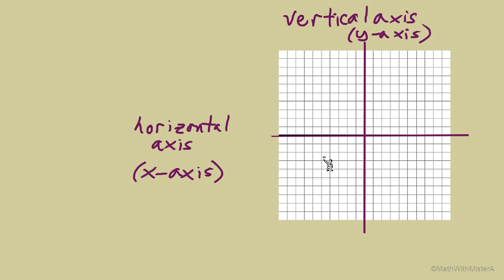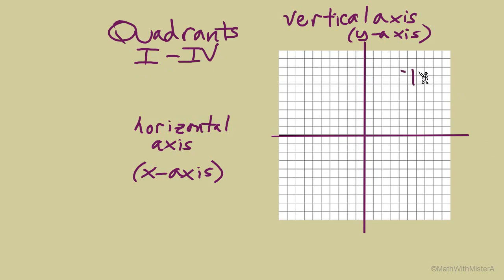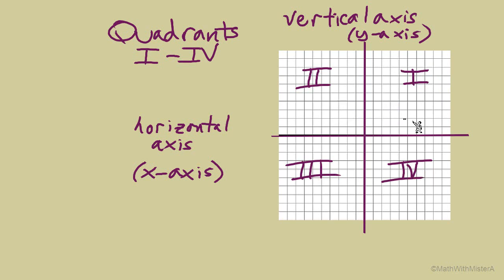The coordinate plane is divided into four sections that we call quadrants, labeled with Roman numerals 1 through 4. Quadrant 1 is in the top right, and then it goes in a counterclockwise direction: Quadrant 2, 3, and 4. The top right is Quadrant 1 because it contains only positive numbers — positive on the horizontal axis and positive on the vertical axis. Quadrants 2, 3, and 4 all have negative numbers in them.